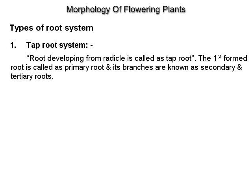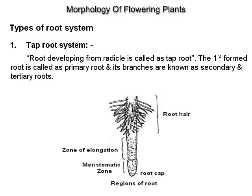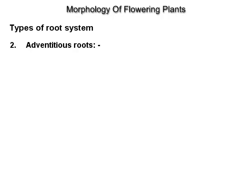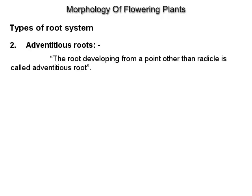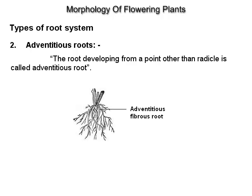Types of root system. Tap root system: a root developing from a radical is called a tap root. The first formed root is called the primary root, and its branches are known as secondary and tertiary roots. Adventitious roots: roots developing from a point other than the radical are called adventitious roots.